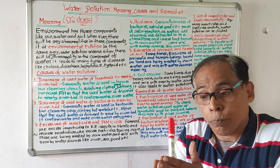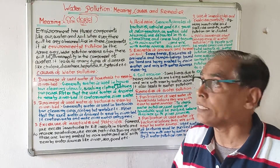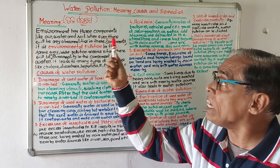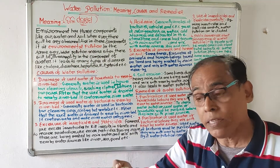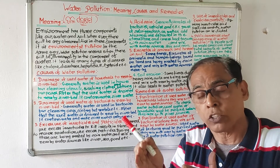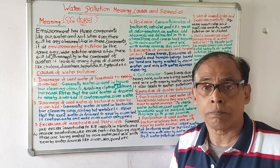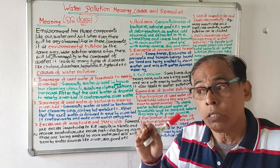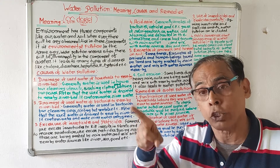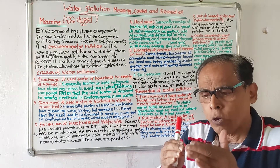The environment has three components: air, water, and soil. Whenever there will be any abnormality in these three components, it is known as environmental pollution.